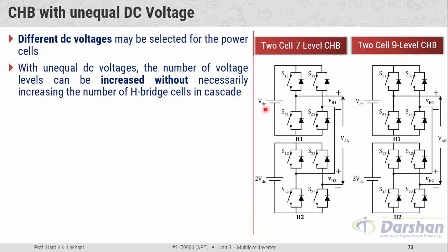Using only two cells we can produce seven levels, and using only two cells with different magnitude DC voltage sources we can produce nine levels. In contrast, with equal DC voltage, producing seven levels requires three H-bridge units and nine levels requires four cells. In short, by implementing the unequal DC voltage concept, we can simplify the construction of the cascaded H-bridge inverter.